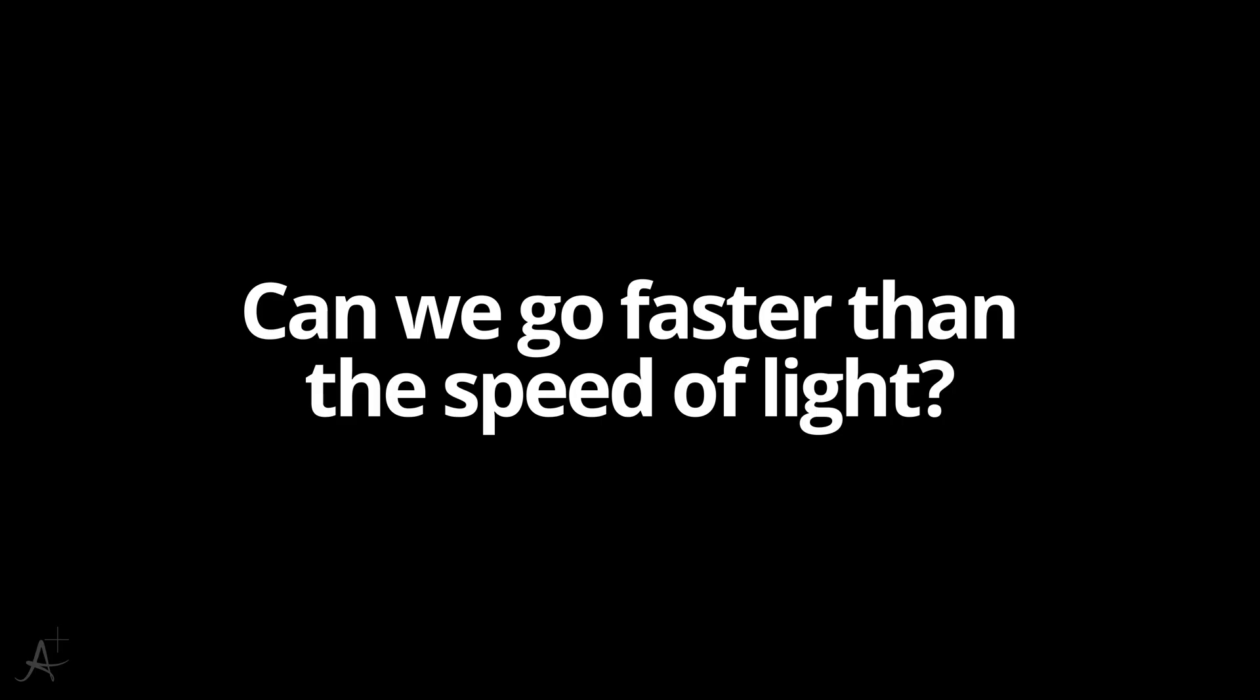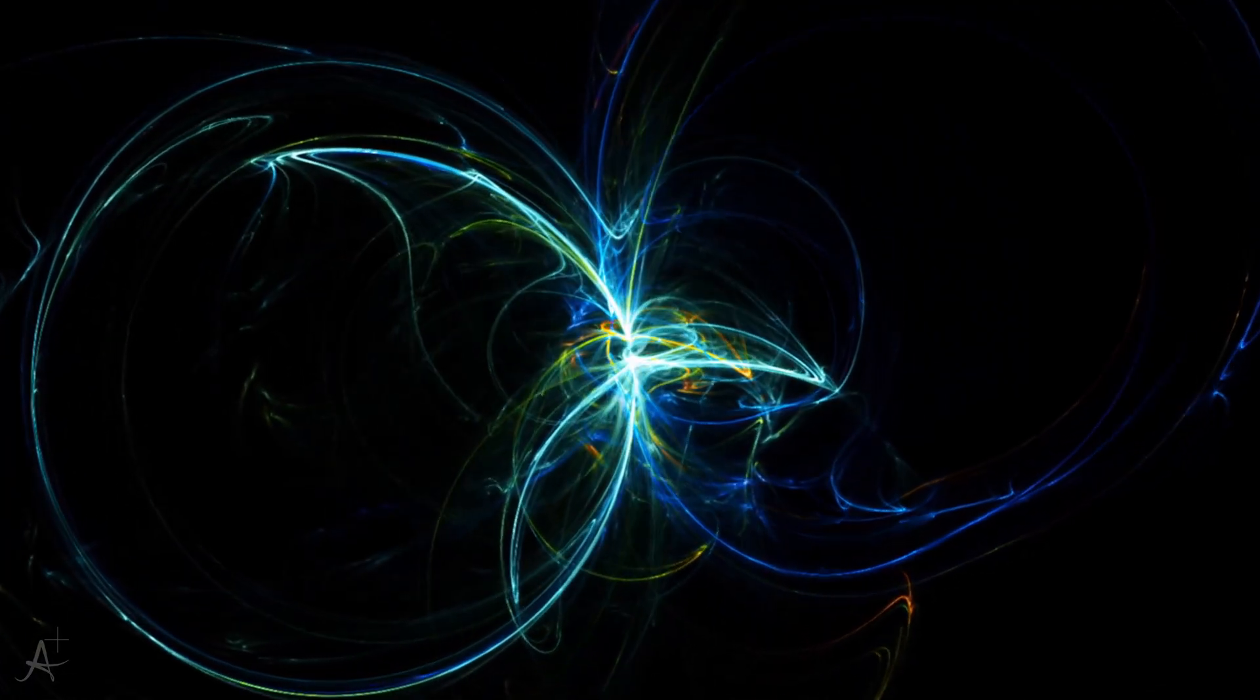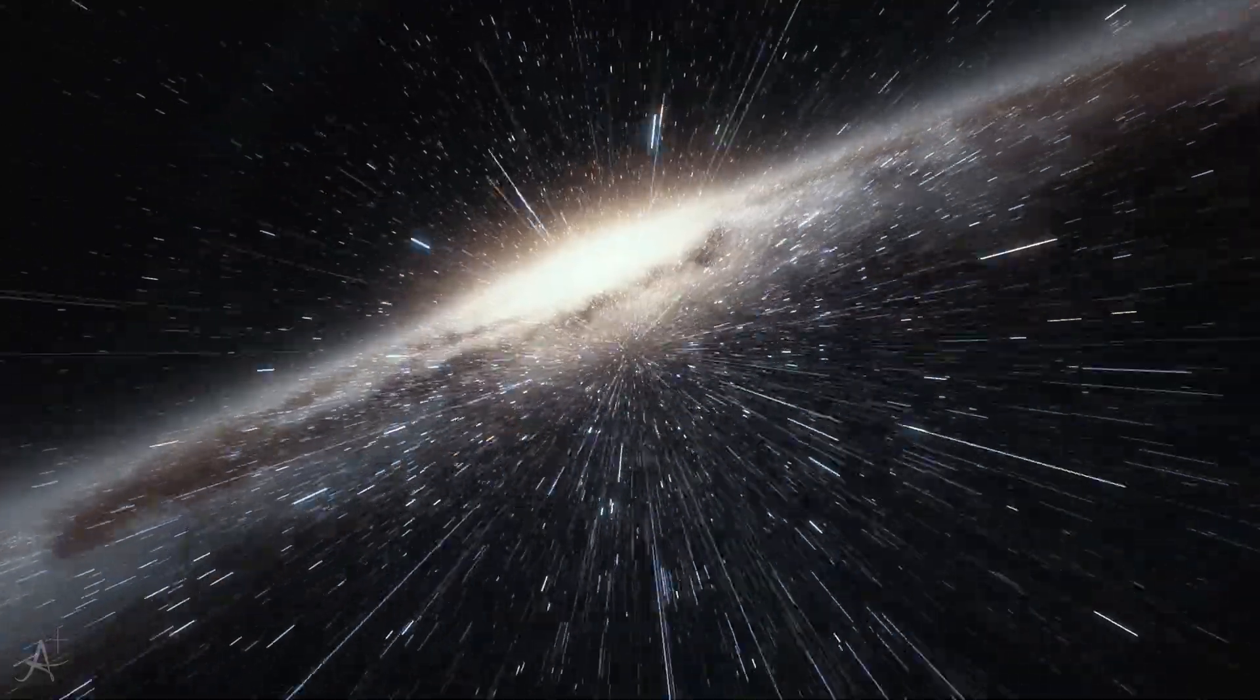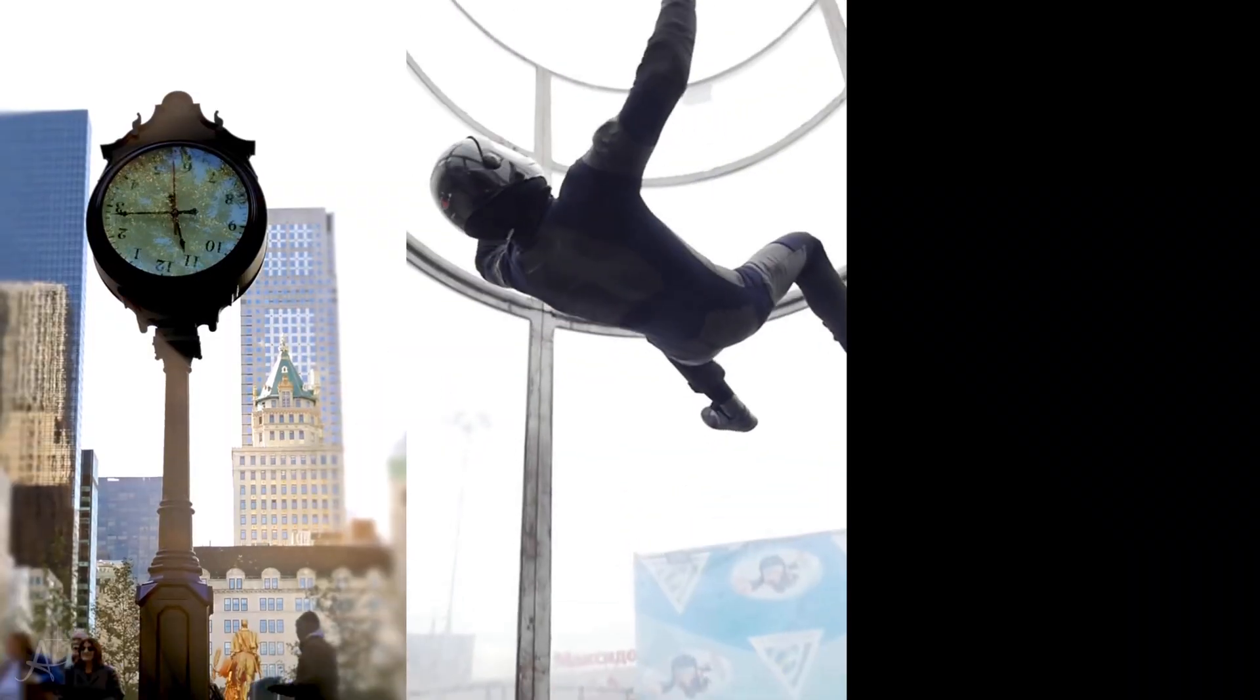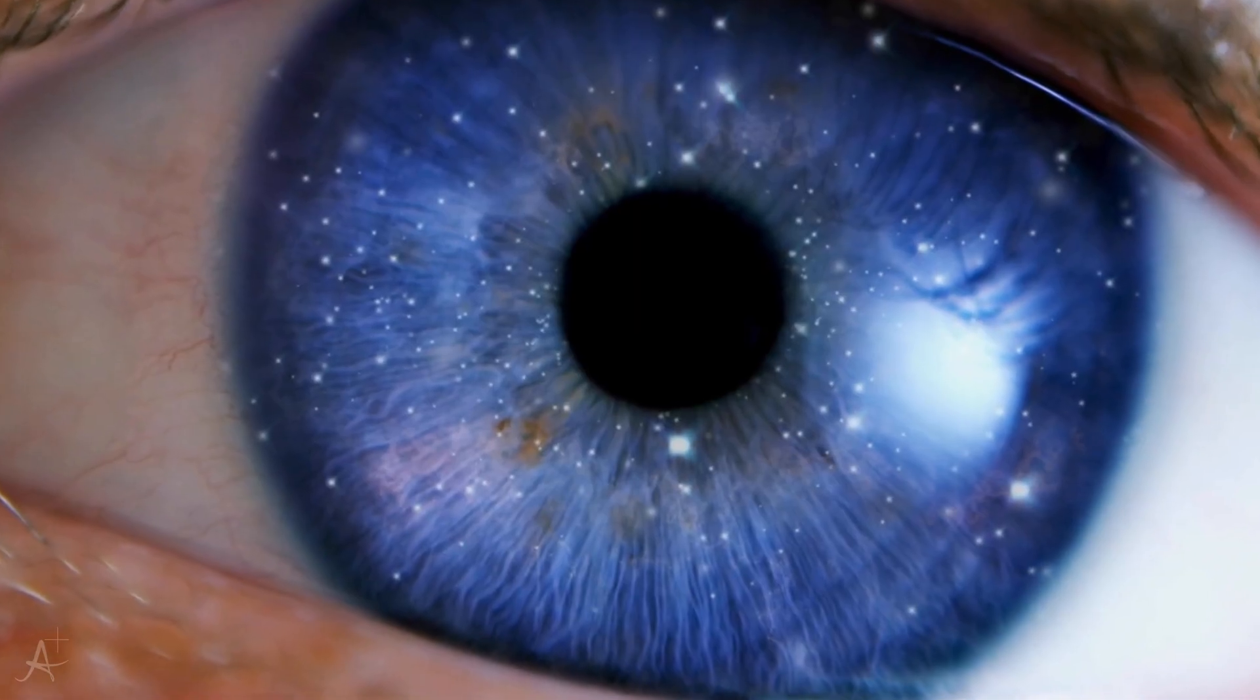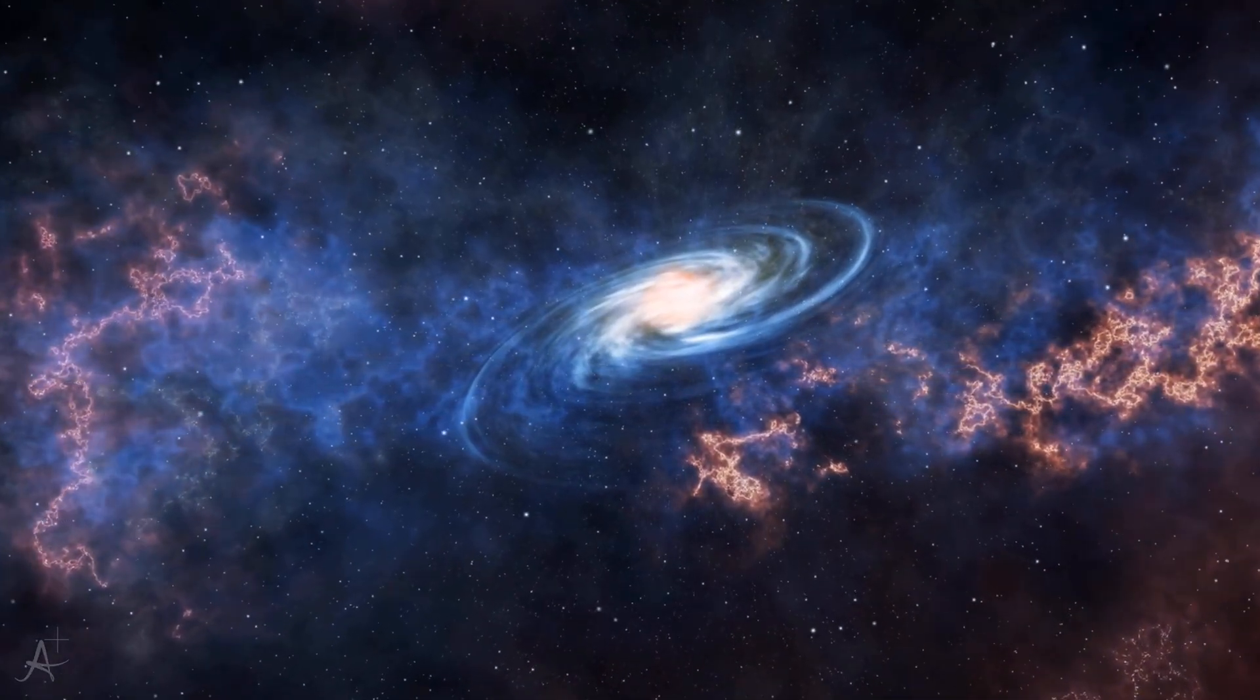The speed of light, the one constant that anchors the universe. We've chased it with rockets, measured it with lasers, and tried to bend it with math. It's more than a number, it's the edge of what we know, the horizon of possibility. Maybe we'll never break it, maybe that's not the point. Because understanding why we can't might be the key to unlocking everything else. Time, gravity, even consciousness itself. The light barrier isn't a wall, it's a mirror, showing us how much farther our curiosity can reach. And until the day we learn to ride the fabric of spacetime itself, the question will remain, not as a limit, but as a challenge. Can we go faster than light?